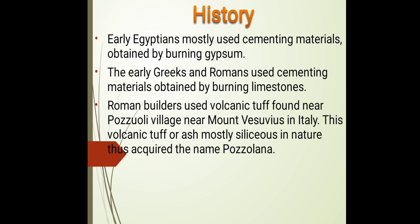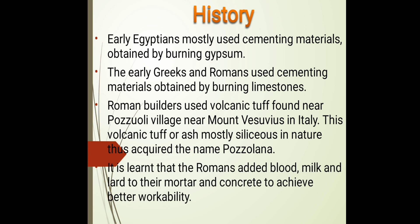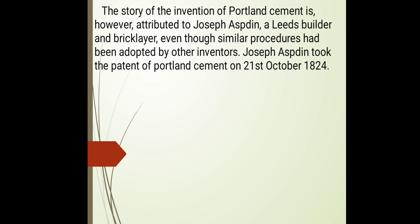The term 'pozzolanic material' comes from a volcanic tuff identified near Pozzuoli village of Mount Vesuvius in Italy. This volcanic tuff is mostly siliceous in nature, rich in siliceous materials, which is why that ash was named pozzolanic material. It was also learned that Romans added blood and milk to concrete to improve workability and flowability without adding excess water.